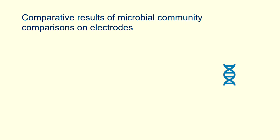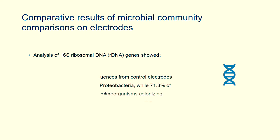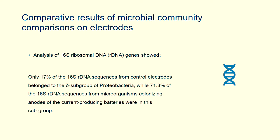And then, the microbial community on the electrode compares the results. Analysis of 16S ribosomal DNA genes showed only 17% of the 16SR DNA sequences from control electrodes belonged to the delta subgroup of proteobacteria, while 71.3% of the 16SR DNA sequences from microorganisms colonizing anodes of the current producing batteries were in this subgroup.